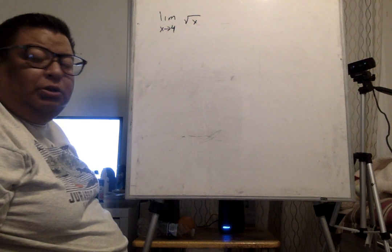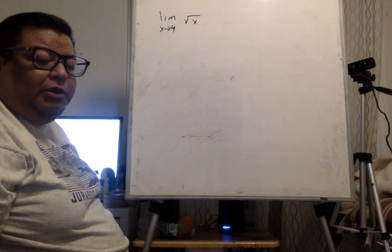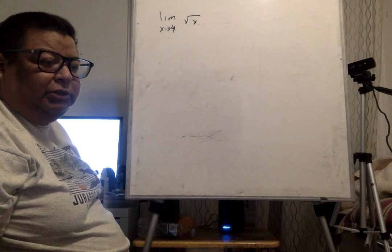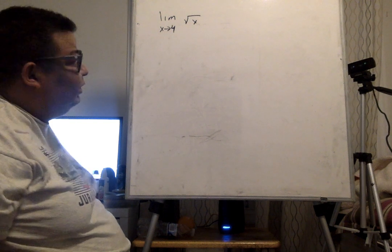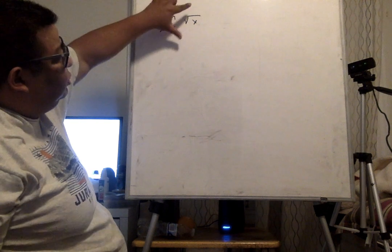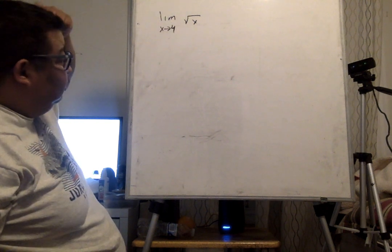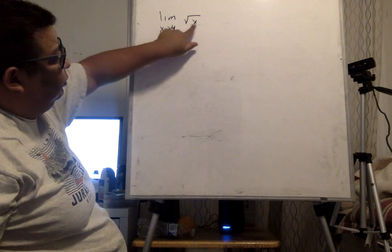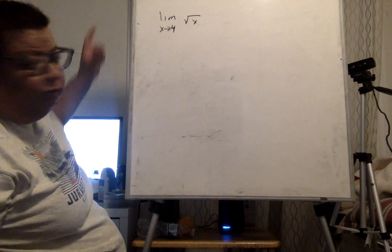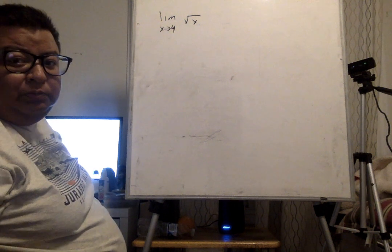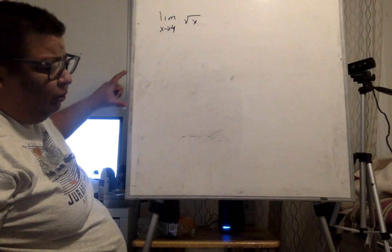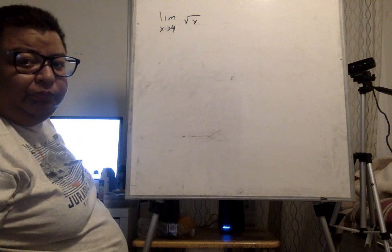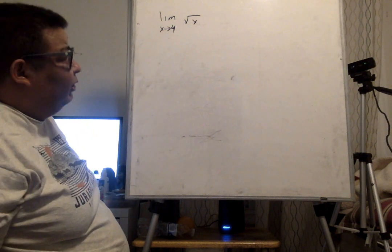Welcome, guys. In this video we're going to talk about how to find an epsilon-delta proof given the function square root of x, and the limit as x approaches 4 of square root of x. First we need to find L, then we need to do some scratch work, then we need to write the final proof.